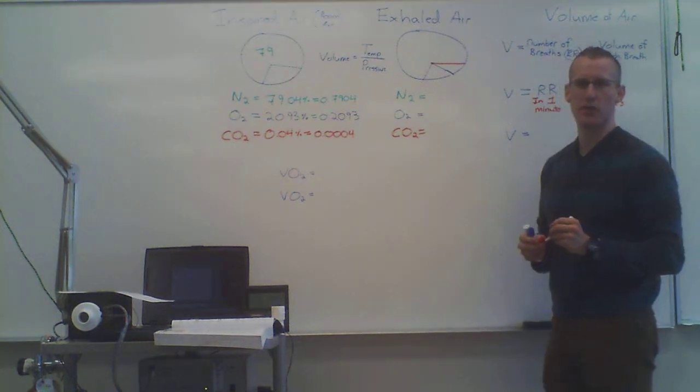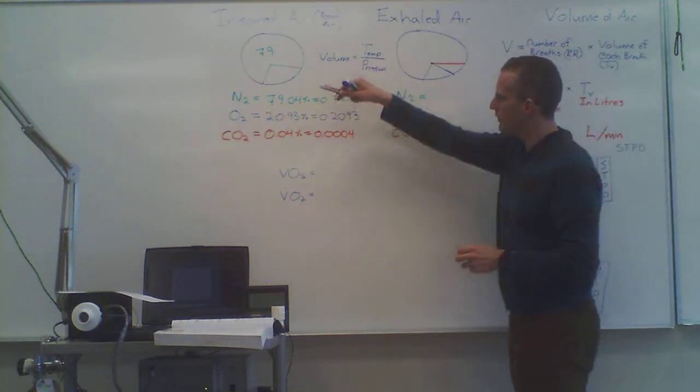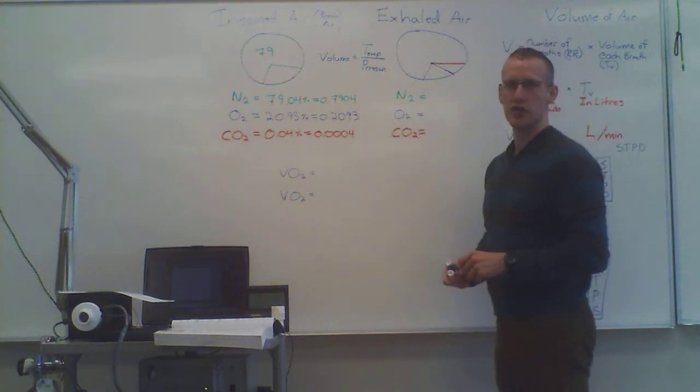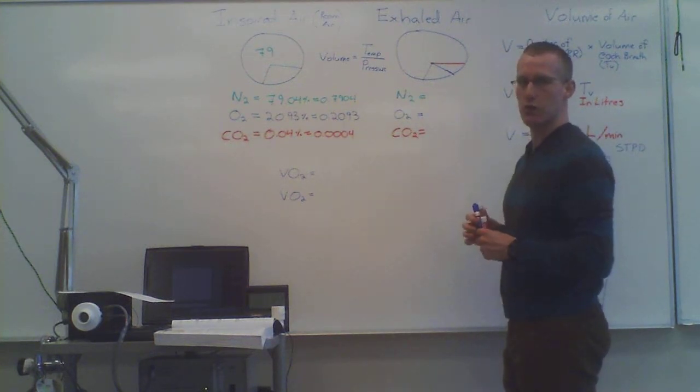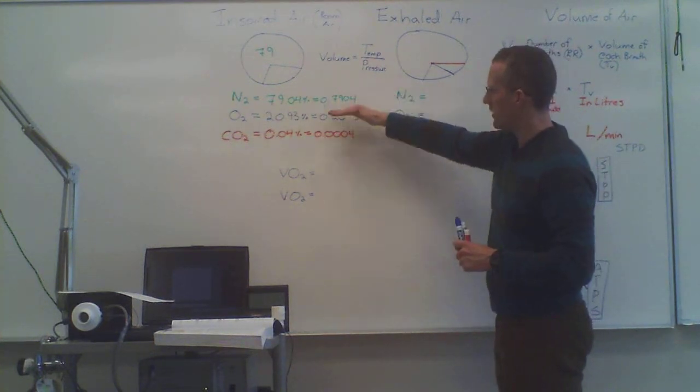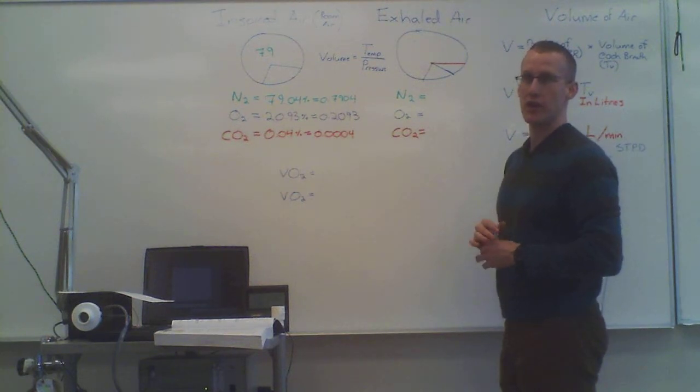So as you can see, the number is much smaller. Now, each of these is called a partial pressure. Because if we know the pressure of the entire room, and you add up these constituents, it will equal the total pressure.